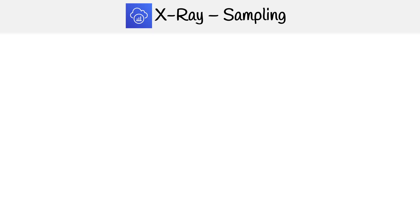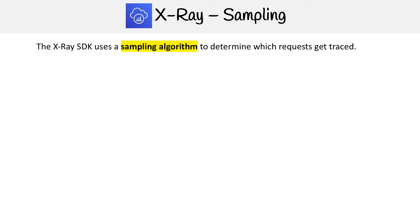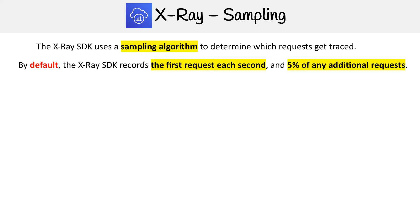As I was saying in the last slide, when looking at traces, not every single request is actually captured. The reason is that when you're using the X-Ray SDK, it uses a sampling algorithm to determine which requests will actually get traced. By default, the SDK records the first request each second and 5% of every additional request.